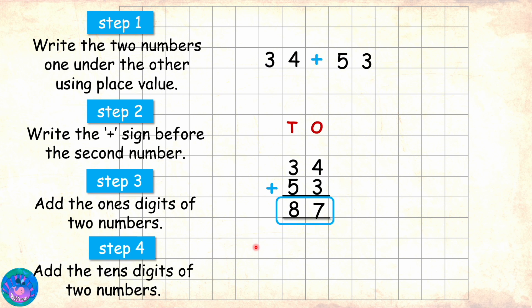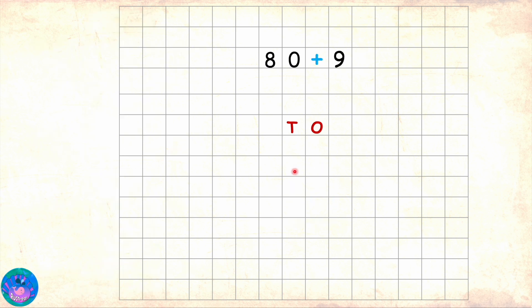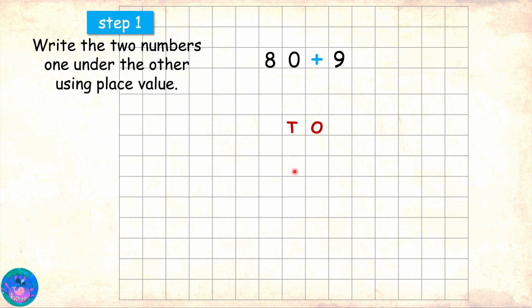Let me try please. Sure! 80 plus 9. Step 1 is to write the numbers one under the other according to place value. I will first write 80 with 8 under the tens and 0 under the ones. Below that I will write 9. No! 9 is a single digit number, so I will write 9 under the ones, not tens. Is that correct Miss R? Absolutely right!